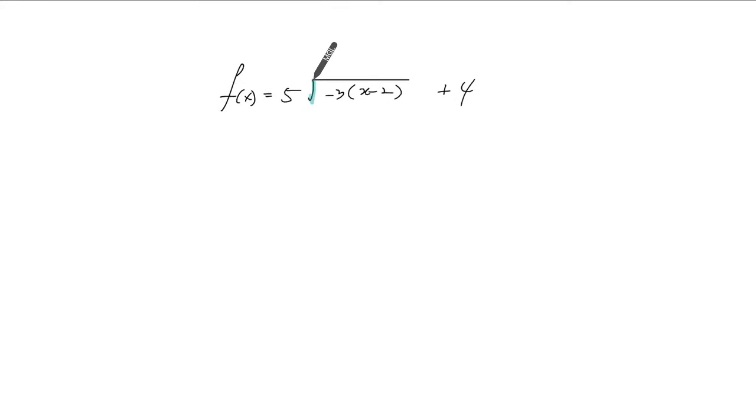The parent function here is the root function. Whatever happens before this root is a horizontal change. Whatever happens afterwards is a vertical change.